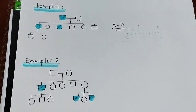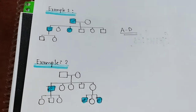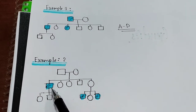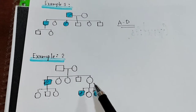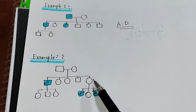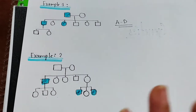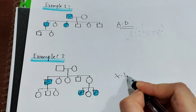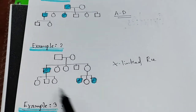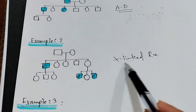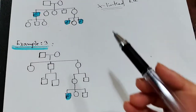In example two, not all generations are affected, and there is no male-to-male transmission — the affected male does not give rise to any affected males or affected females. The female may have been a carrier. We also observe that no females are affected at all. These two hints together — no females affected and no male-to-male transmission — indicate this is an X-linked recessive disease.